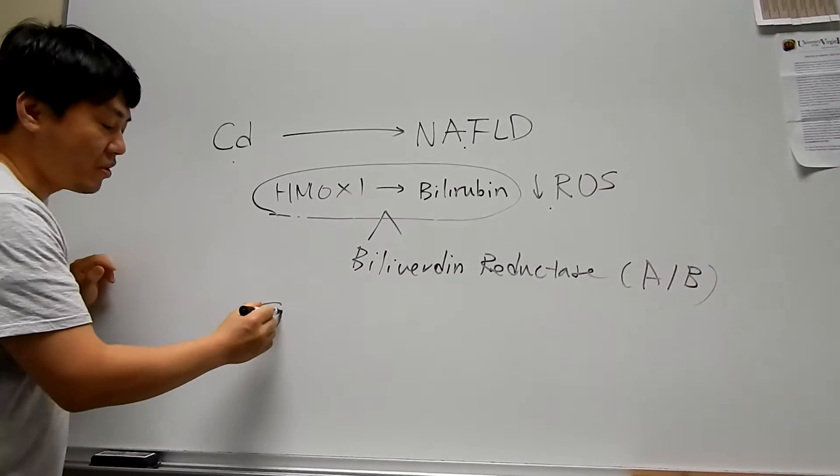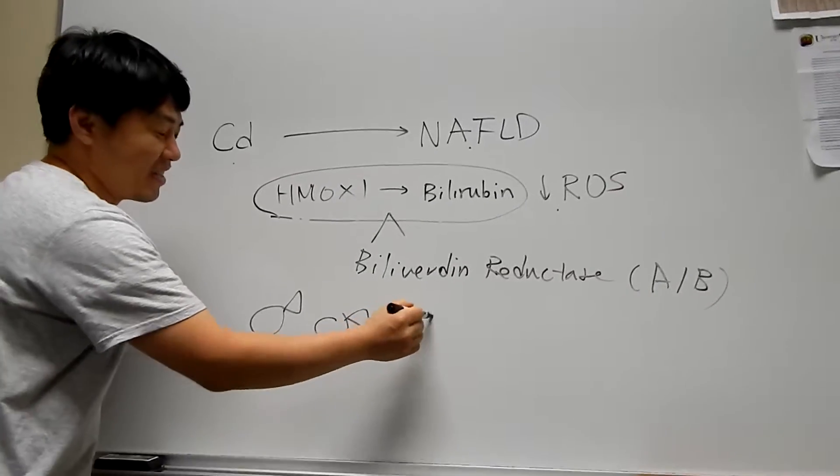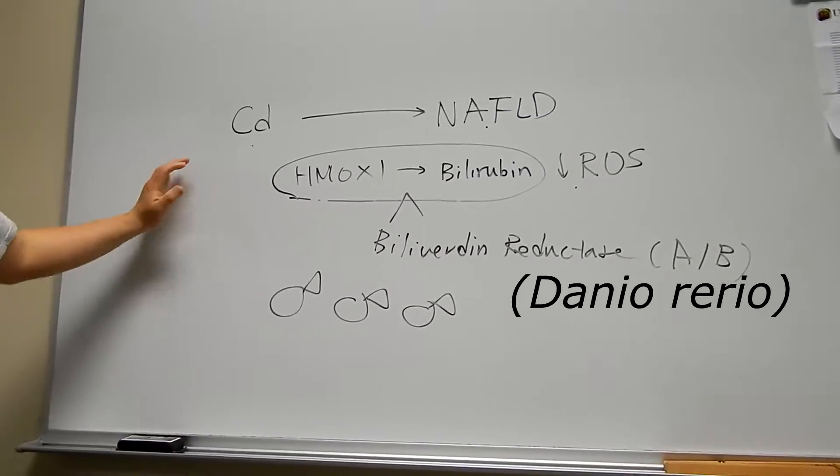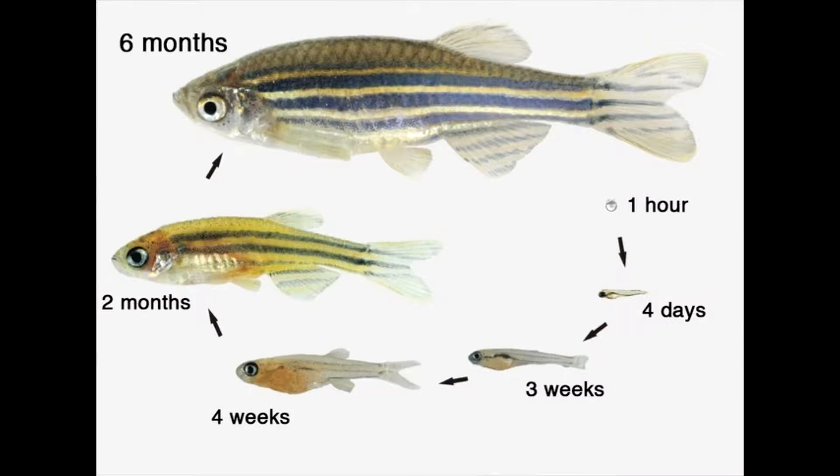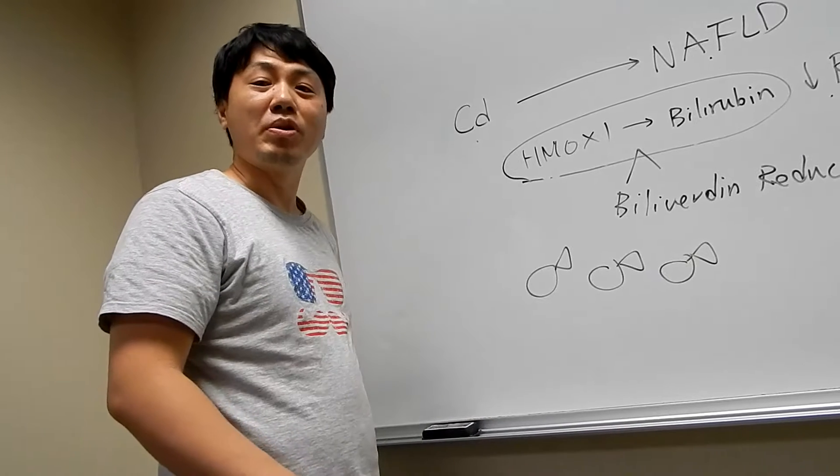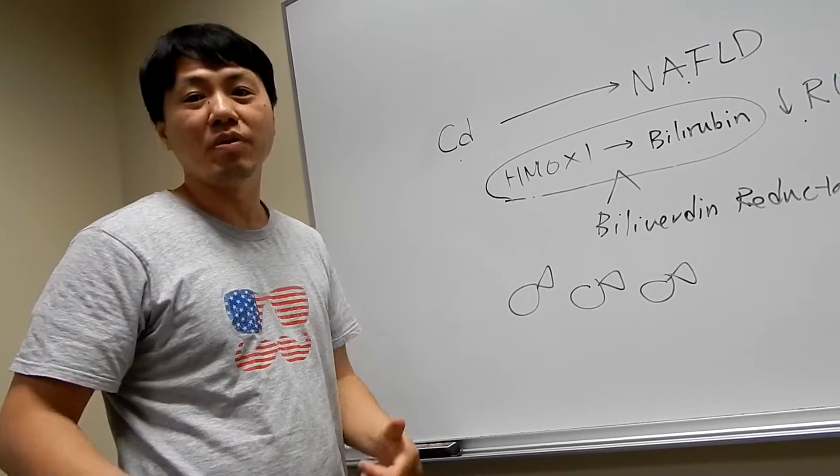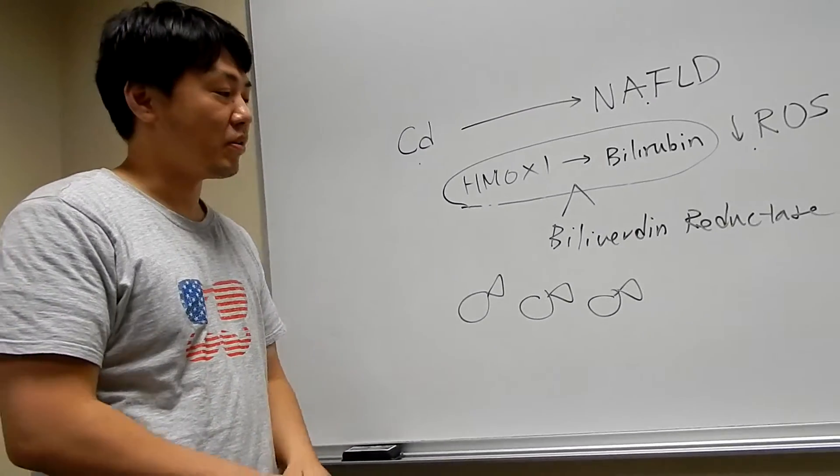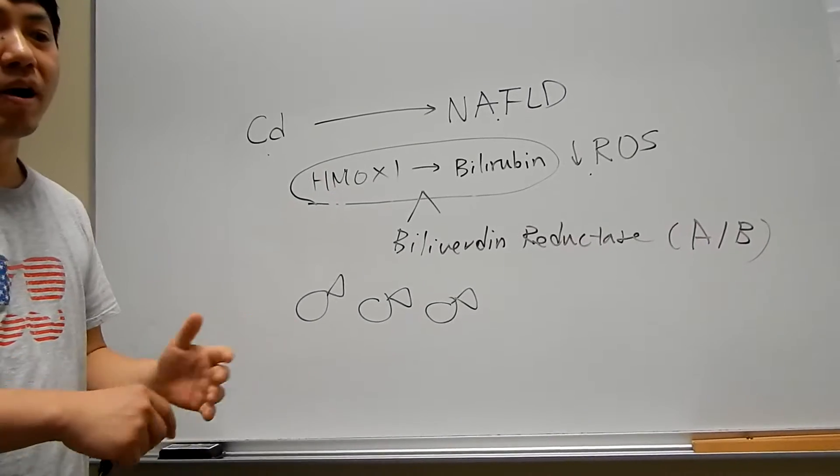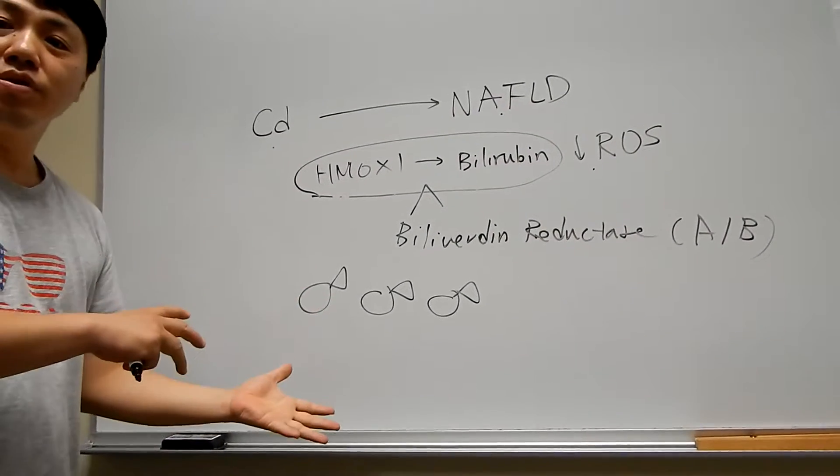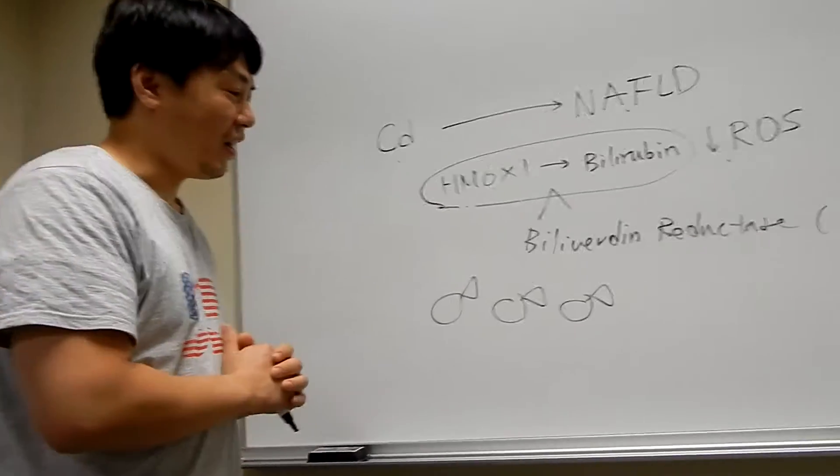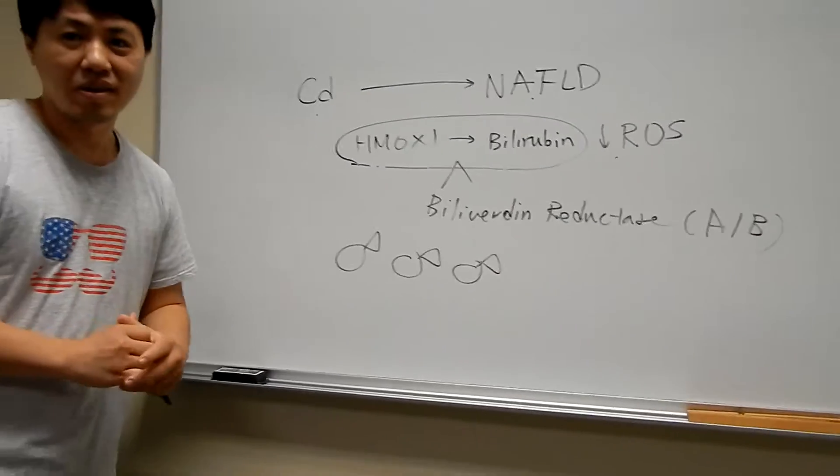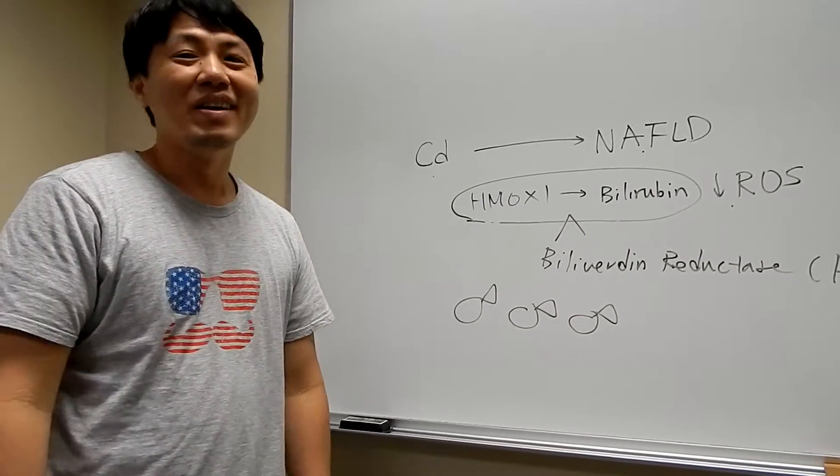Now why do we use zebrafish? There are multiple reasons. They reproduce really fast. They have a spine, they're vertebrate animals, so they're similar to humans. There's a lot already known about zebrafish. They are really relevant to human disease as well. And also the zebrafish has the liver. So that's why we're using this one. They're very similar to humans in a lot of their physiology.